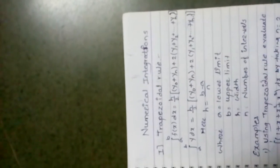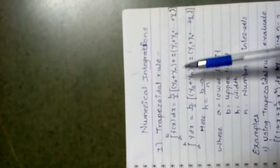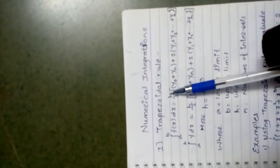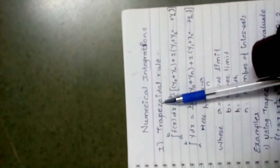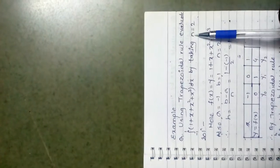That is the basic information about the trapezoidal rule. If we find y1, y2, y3 up to yn, and h, we can find the solution of the given function using the trapezoidal rule. For that, let us look at the first example: evaluate the integration from -1 to 1 of (1 + x + x² + x³) with respect to x, by taking n = 2.